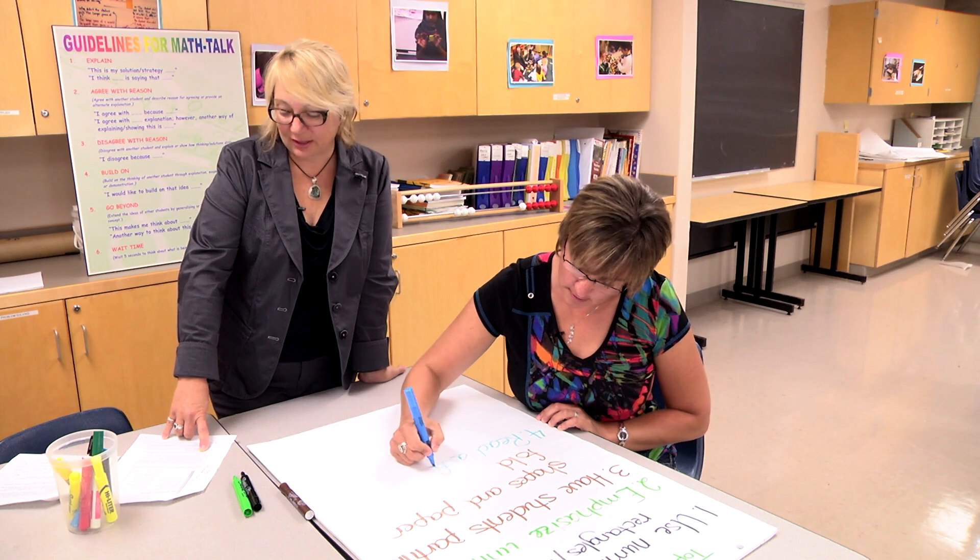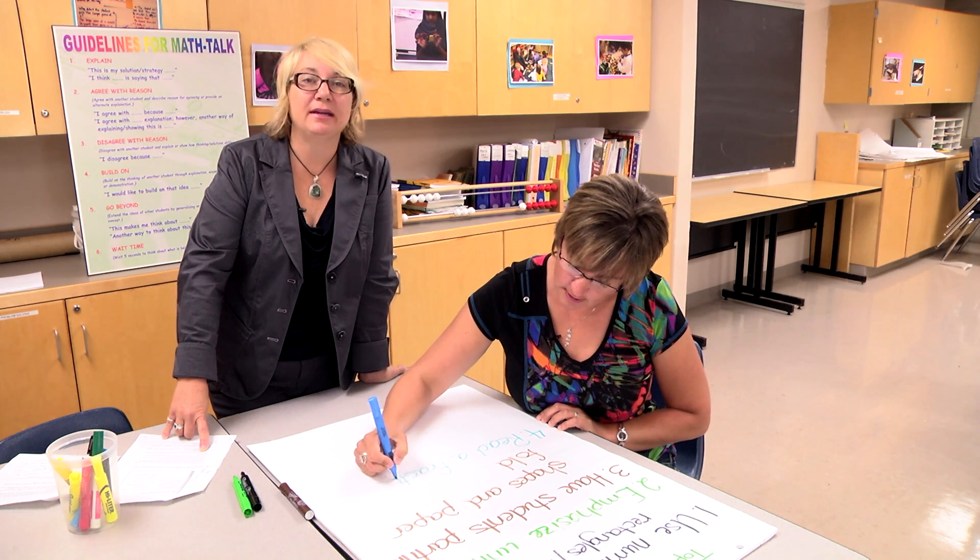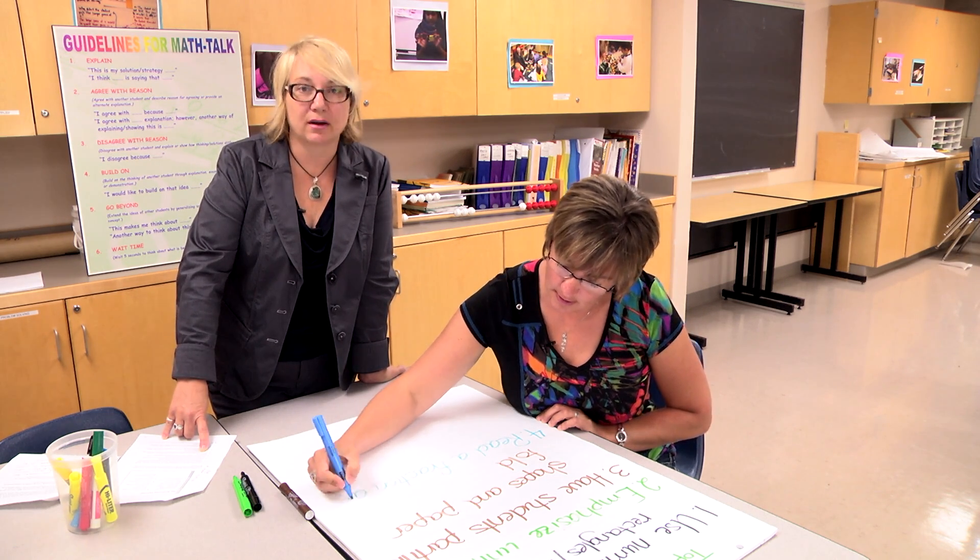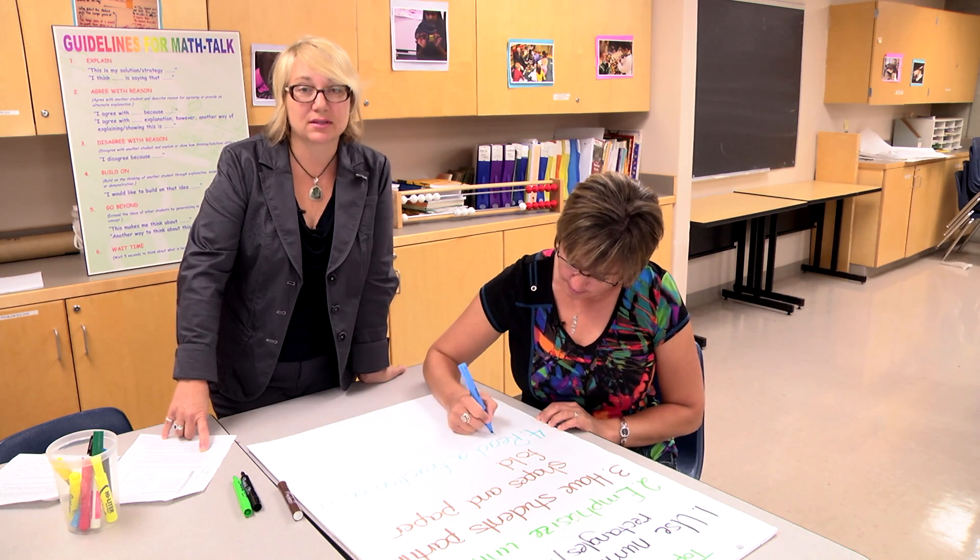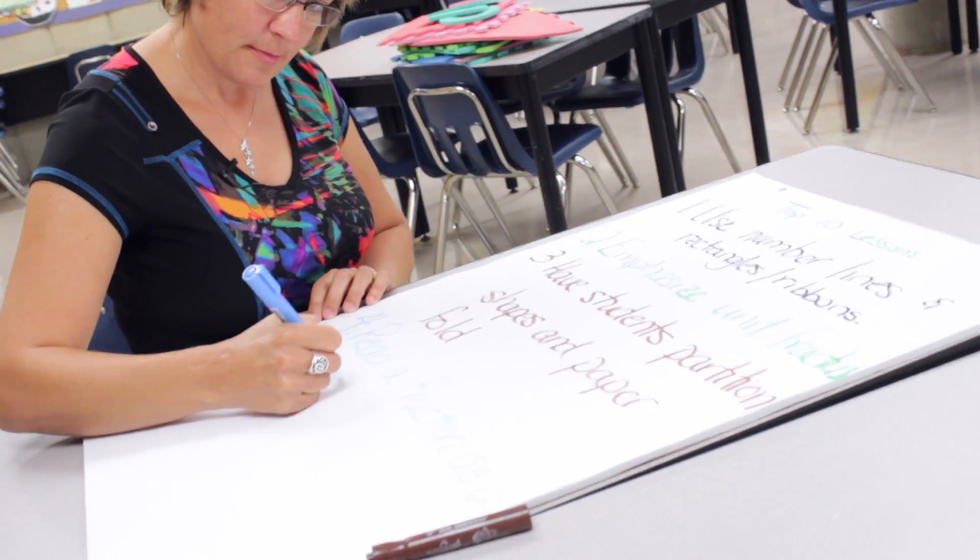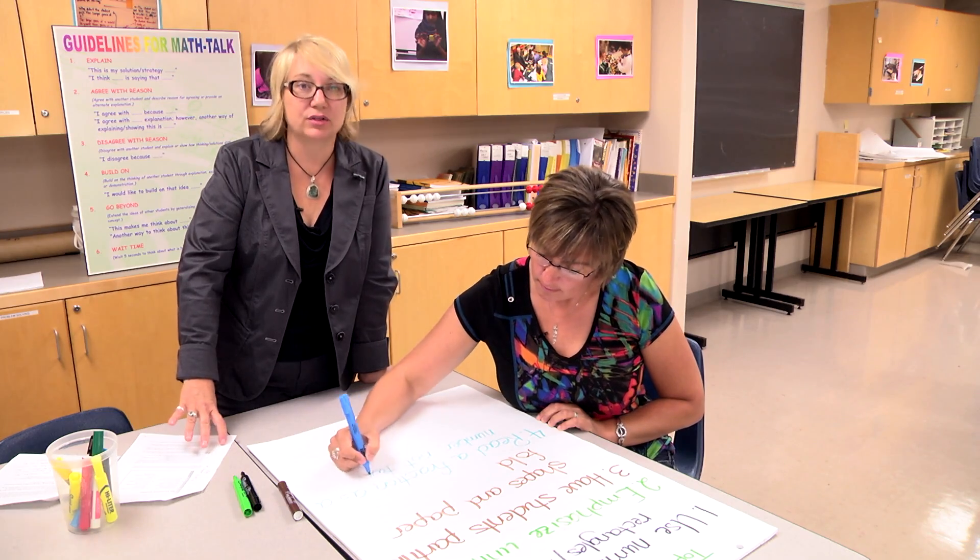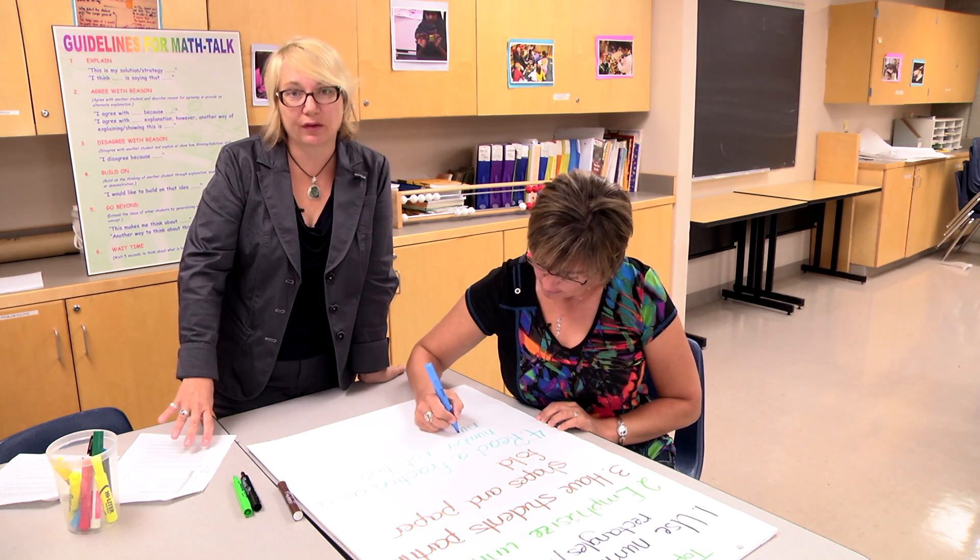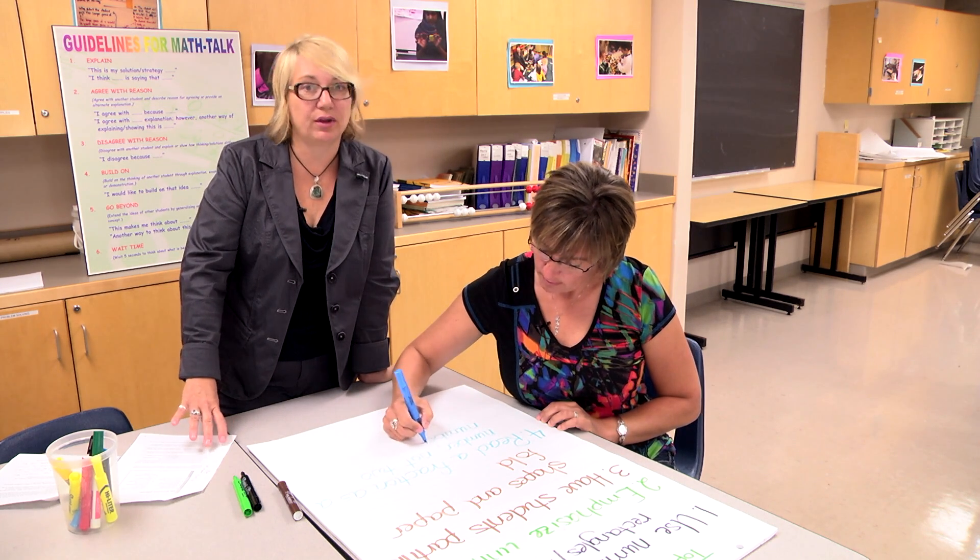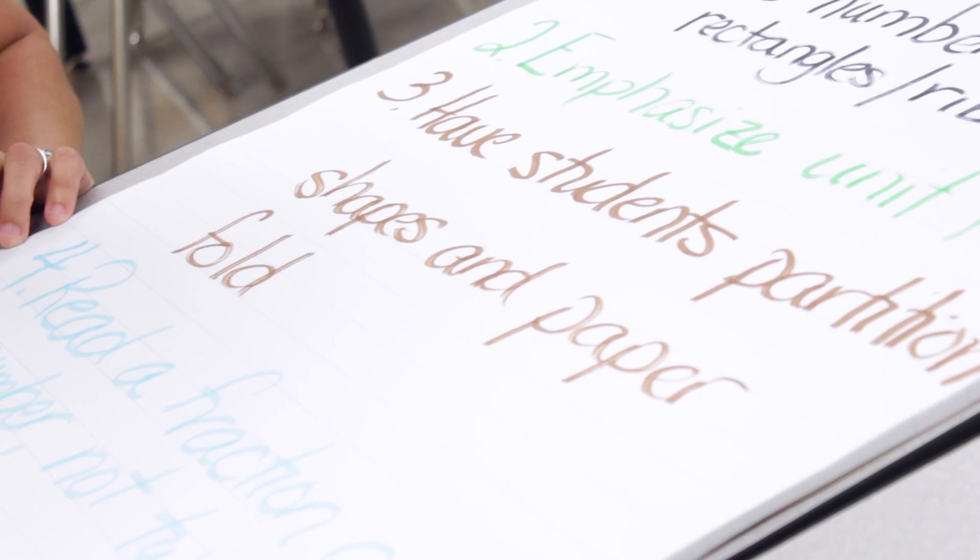The fourth lesson learned is that we really need to be reading fractions as a number, not two numbers. The fraction represents one quantity and so we need to read that as one quantity. So rather than saying 1 over 2, we talk about 1 one-fifth. Rather than talking about 3 over 4, we talk about 3 fourths.